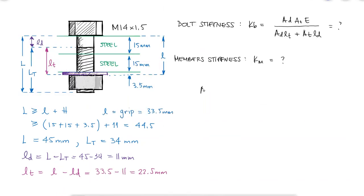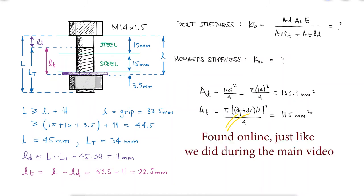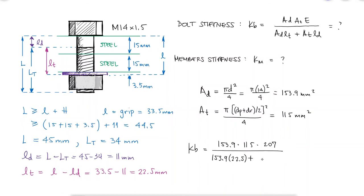With the same cross-section area of the non-threaded part and the same cross-section area for the threaded part that uses the average between the root diameter and the pitch diameter, we find that the bolt stiffness is 775 MN per meter. And remember that the elastic modulus is that for the material of the bolt.